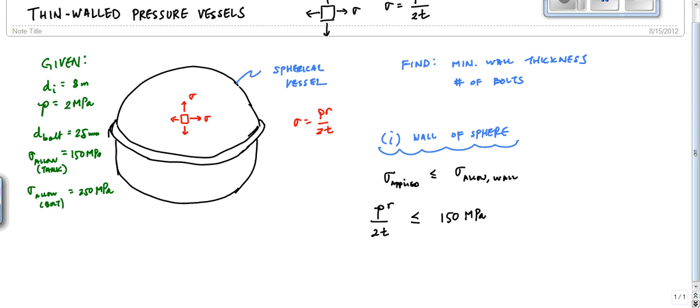And so now we just have to solve for T. And that means that T is greater than or equal to PR, which was 2 megapascals, times the radius, which is 4 meters, divided by 2 times 150 megapascals. And that gives me 4 divided by 150 meters, which is, does someone have a number real fast? 4 divided by 150? Okay, so 26, if you convert to millimeters, 26.67 millimeters. That was way too easy.